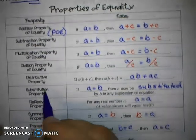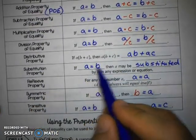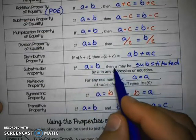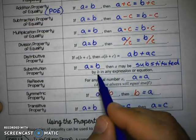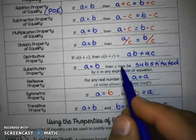The substitution property we will use quite a bit. And that is if two values are equal, if A equals B, then A may be substituted for B in any expression or equation.